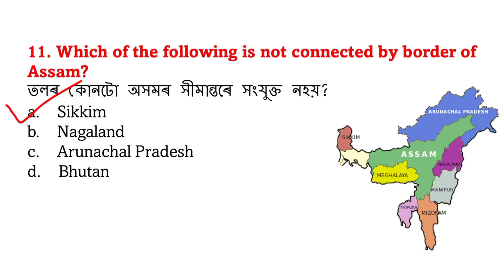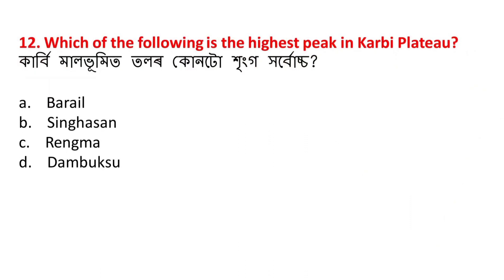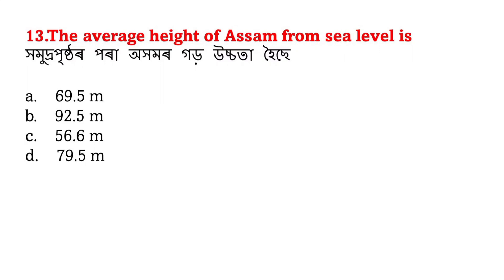The next question is about the highest peak in the Karbi plateau. What is the highest peak in the Karbi plateau? Also, the average height of Assam from sea level is 79.5 meters.